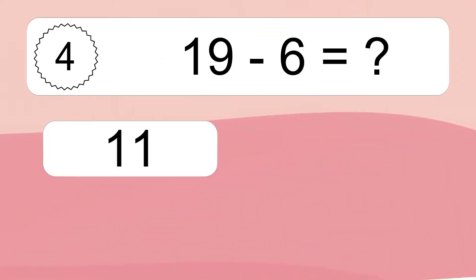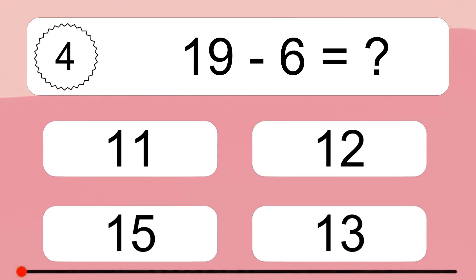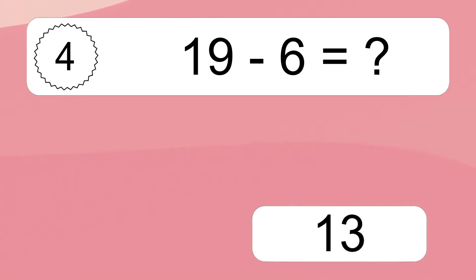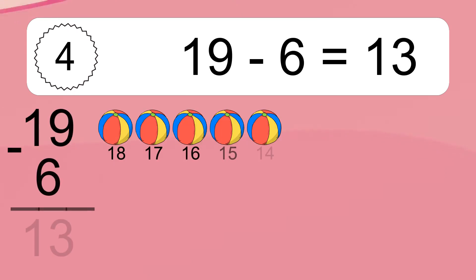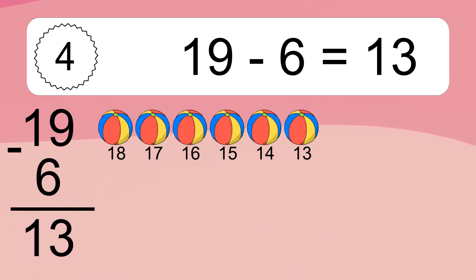19 minus 6 equals what? 19 minus 6 equals 13. Let's count it: 18, 17, 16, 15, 14, 13.